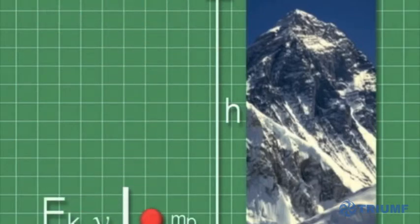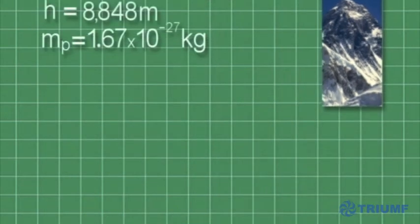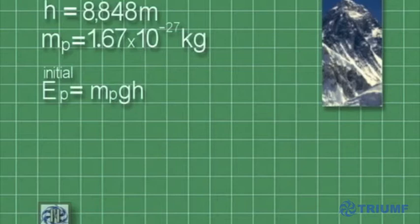As the proton begins its fall, it will convert its gravitational potential energy, which depends on its mass and height, into kinetic energy.